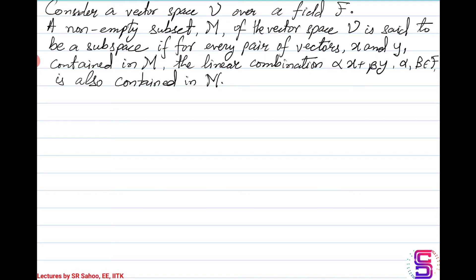Let us see this. First of all, anything to qualify as a subspace, it has to be a non-empty subset of the vector space. Consider some non-empty subset of this vector space V, label this subset as M. Now you take two vectors which are in this particular set M. These vectors X and Y belong to the vector space V because M is a subset.